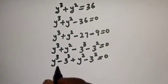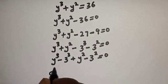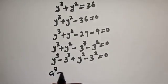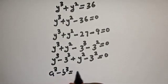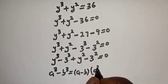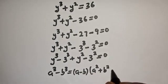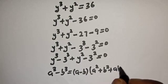Take note of this exponential rule: if you have A raised to power 3 minus B raised to power 3, this is equal to A minus B, bracket, A squared plus B squared plus AB.